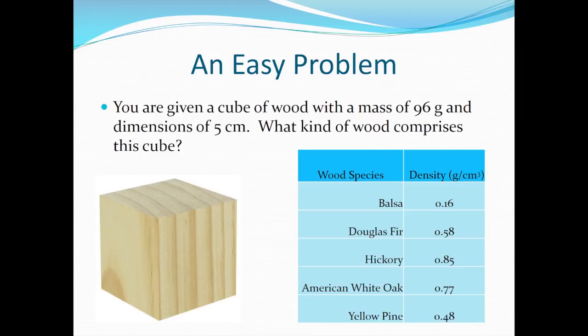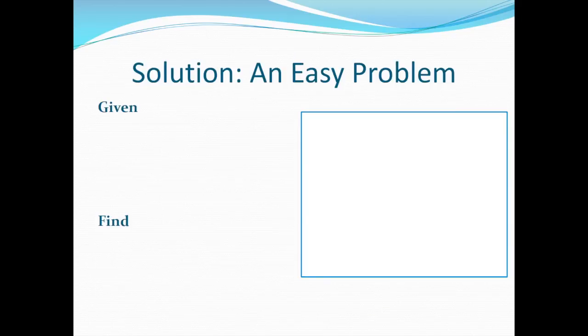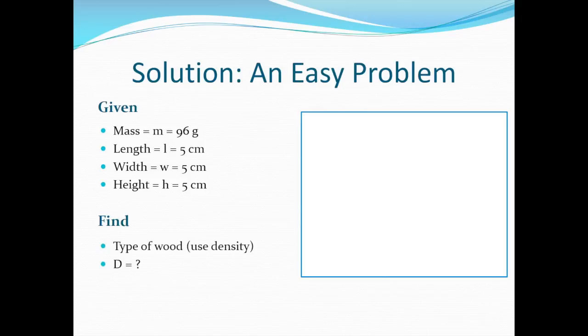What should we do first to solve this problem? Let's start by identifying what we're given and what we need to find. We were told that the mass of the cube is 96 grams, and its length, width, and height are 5 centimeters. We're trying to find out what kind of wood this cube is made from, so we need to find the density.